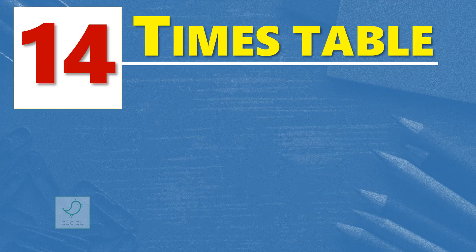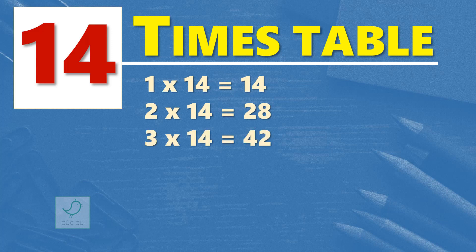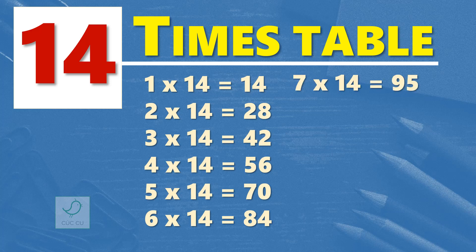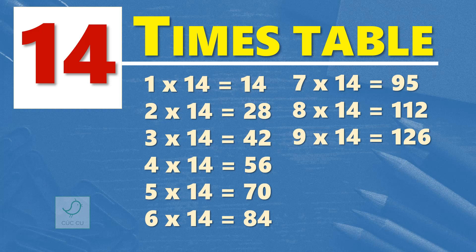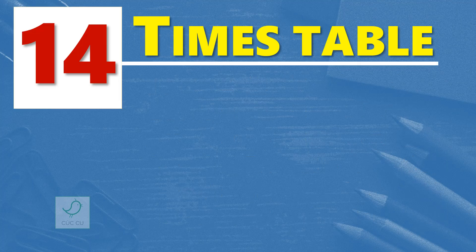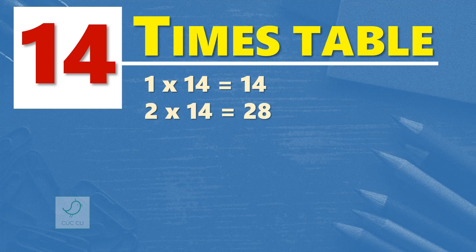14 times table: 1 time 14 is 14, 2 times 14 are 28, 3 times 14 are 42, 4 times 14 are 56, 5 times 14 are 70, 6 times 14 are 84, 7 times 14 are 98, 8 times 14 are 112, 9 times 14 are 126, 10 times 14 are 140, 11 times 14 are 154, 12 times 14 are 168. One more time.